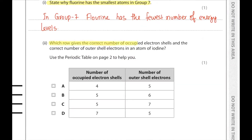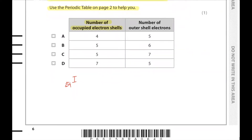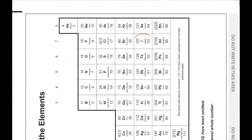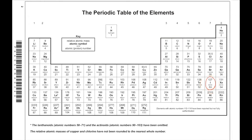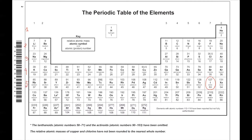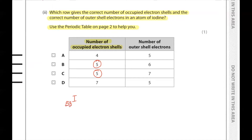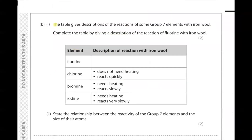Which row gives the correct number of occupied electron shells and the correct number of outer shell electrons in an atom of iodine? Using the periodic table, iodine has 53 electrons. It belongs to group seven and to period number five, so the number of occupied electron shells is five and the number of outer shell electrons is seven. Therefore, five and seven — answer C — is correct.